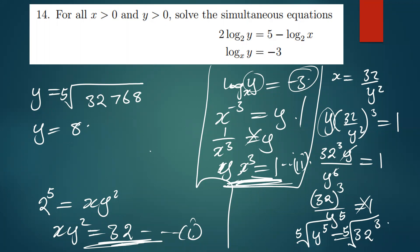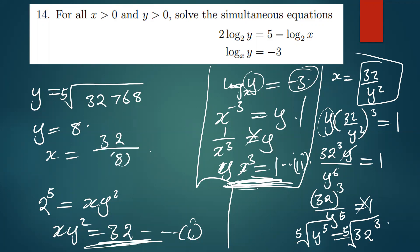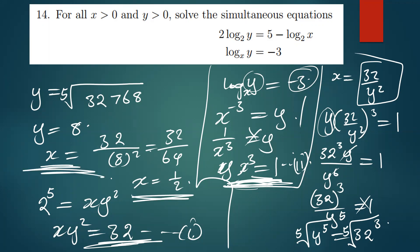After finding the value of y, we use equation one to find x. The value of x is equal to 32 over y², which is 8² = 64. So x = 32 over 64, meaning the value of x becomes 1/2. This is how simple the question was.